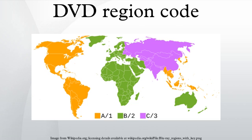However, most NTSC players cannot play PAL discs, and most NTSC TVs do not accept 576i video signals as used on PAL/SECAM DVDs. Those in NTSC countries such as the United States generally require both a region-free multi-standard player and a multi-standard television to view PAL discs, or a converter box, whereas those in PAL countries generally require only a region-free player to view NTSC discs. There are also differences in pixel aspect ratio and display frame rate. NTSC discs can be played on most DVD systems worldwide, while PAL discs play on very few players outside of PAL/SECAM countries.